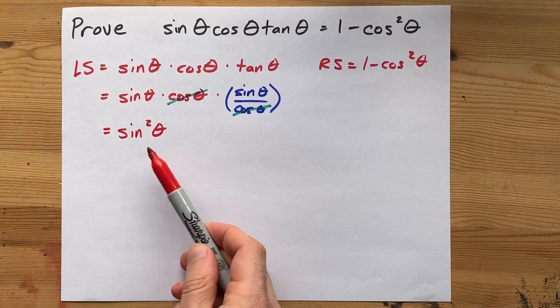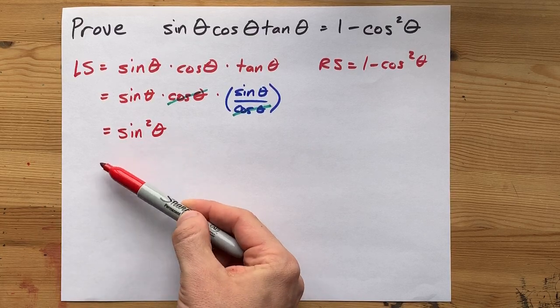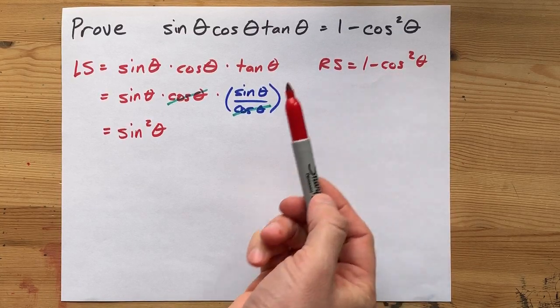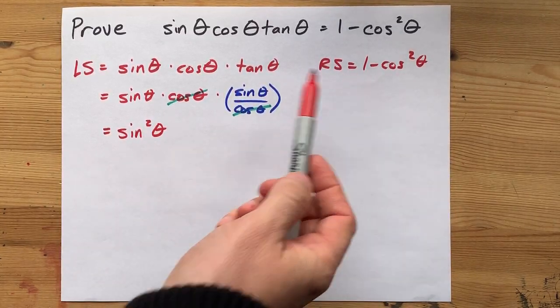Now some people will have you write sine squared theta equals 1 minus cos squared theta. That's what this is over here, because that's the Pythagorean identity.